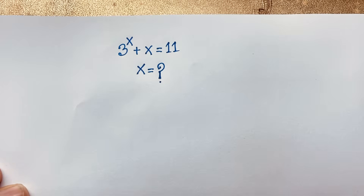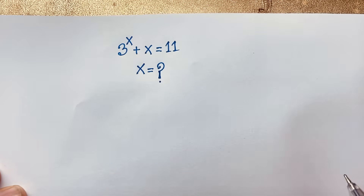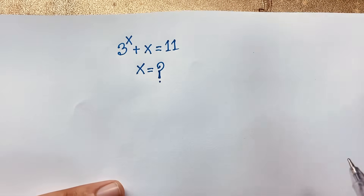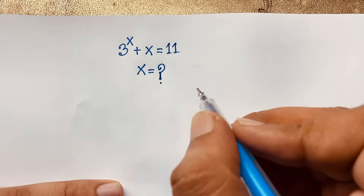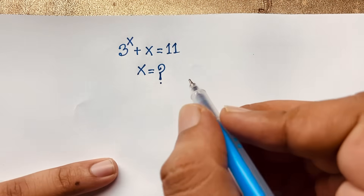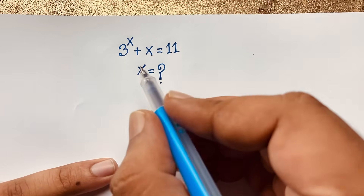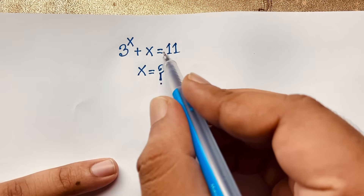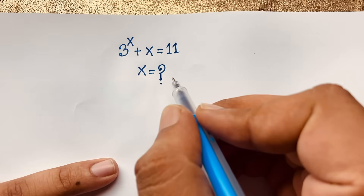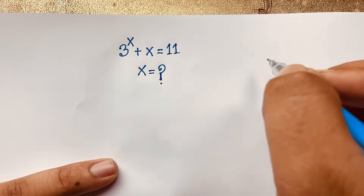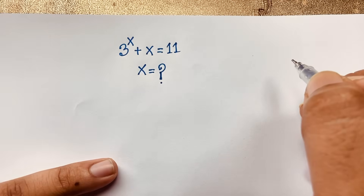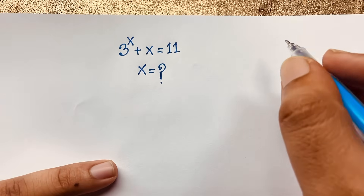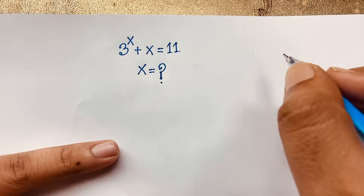Hello everyone. Welcome to Russell's Classroom. Today we have solved a nice math Olympiad question. This question is 3 to the power x plus x is equal to 11, where x is equal to 5. How to solve this exponential math problem?